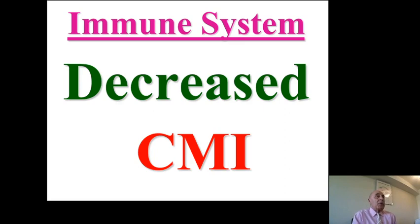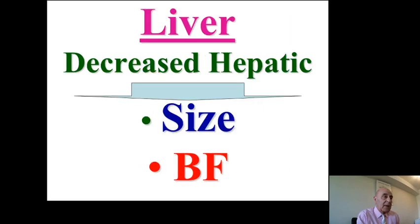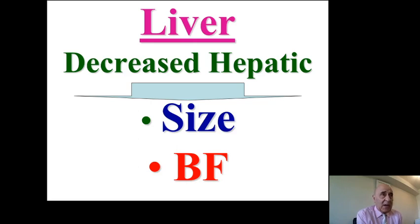With advancing age, the immune system is compromised, particularly cell-mediated immune responses. The size of the liver is expected to decrease with advancing age, and the blood flow to the liver is also expected to decrease.